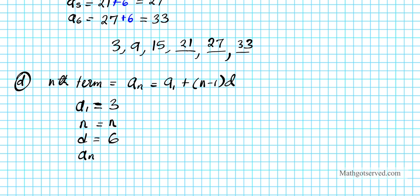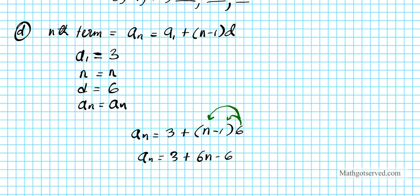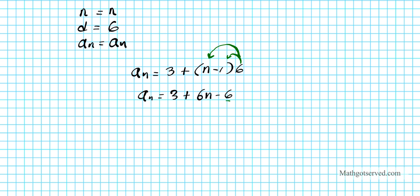To find the reduced form, we distribute the 6: A_N = 3 + 6N − 6. Combining constants, we get A_N = 6N − 3. This is the explicit formula for generating the terms of the sequence.